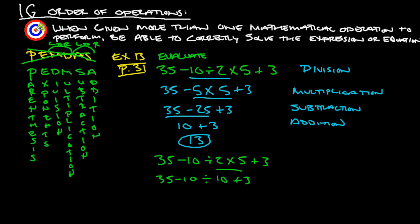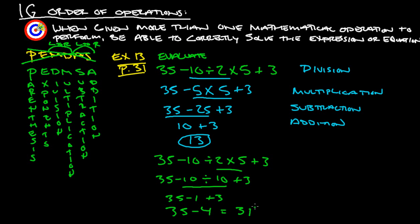No more multiplication, so next we do division: negative 10 divided by 10 gives us 35 minus 1 plus 3. Then PEMDAS says to add: 1 plus 3 is 4, so you'd end up with 35 minus 4, which is 31 — and that's not right. The answer should be 13.